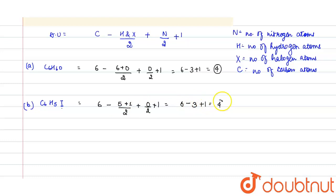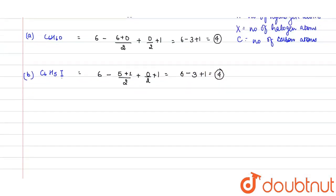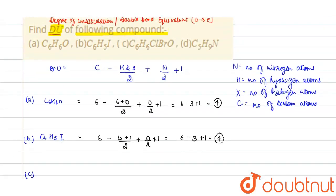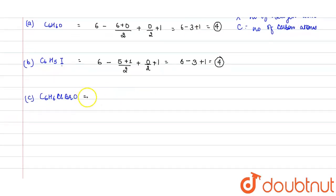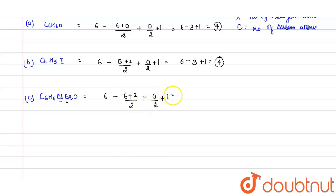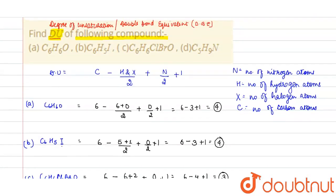Compound C given in the question is C6H6ClBrO. Here, the number of carbon atoms is six, minus six hydrogen atoms, plus two halogen atoms (chlorine and bromine), divided by 2, plus zero nitrogen atoms divided by 2, plus 1. Calculating: six minus four plus one equals three. So the degree of unsaturation for compound C is three.